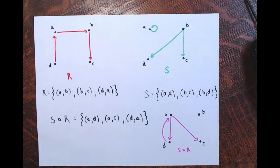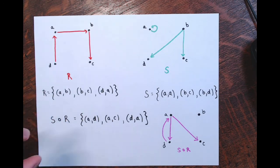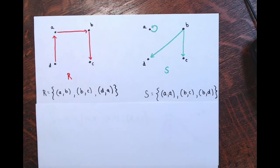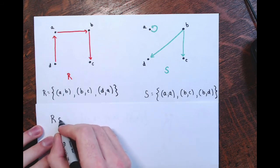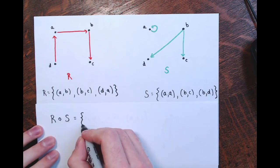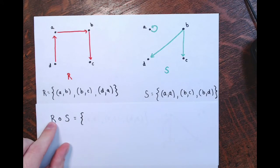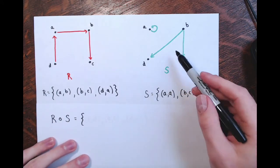Now let's do R∘S — note you could also do S∘S, R∘R, or even three-way compositions, but I'll stick to two. For R∘S, you apply S first and then R — so I'll look at the right picture first, then the left picture.